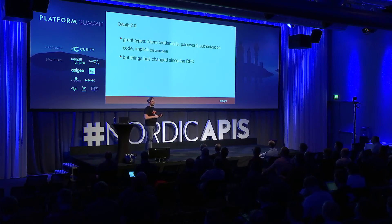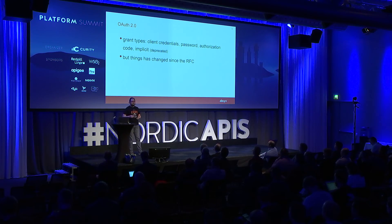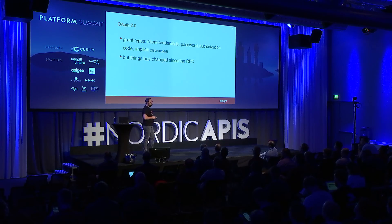At Allegro we use OAuth quite a lot, and the original RFC for OAuth 2.0 has been with us for quite some time. It is a solid specification that we all know quite well. The original specification introduced four different grant types: client credentials, authorization code, the implicit grant type, and the password grant type.